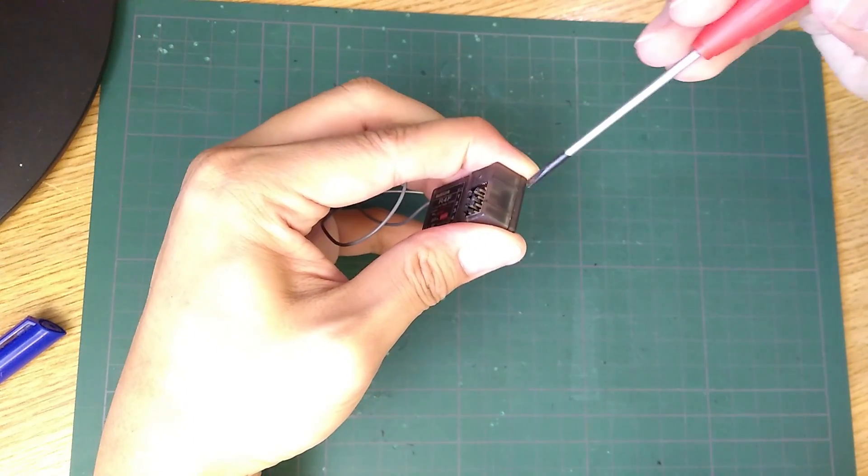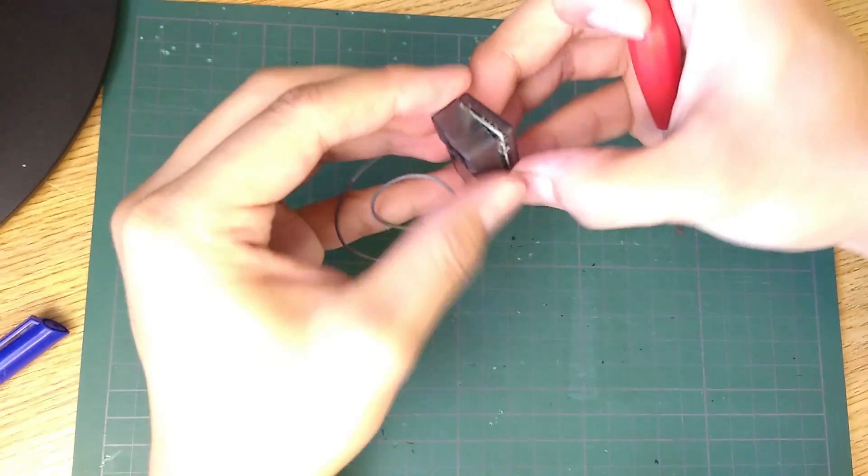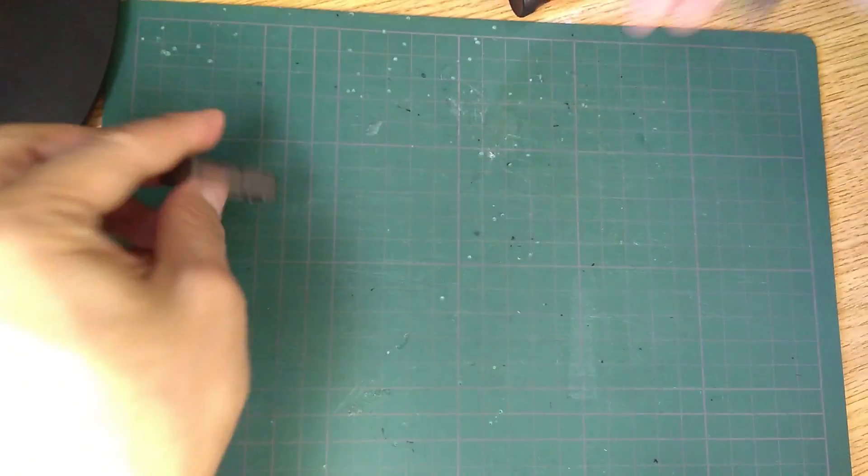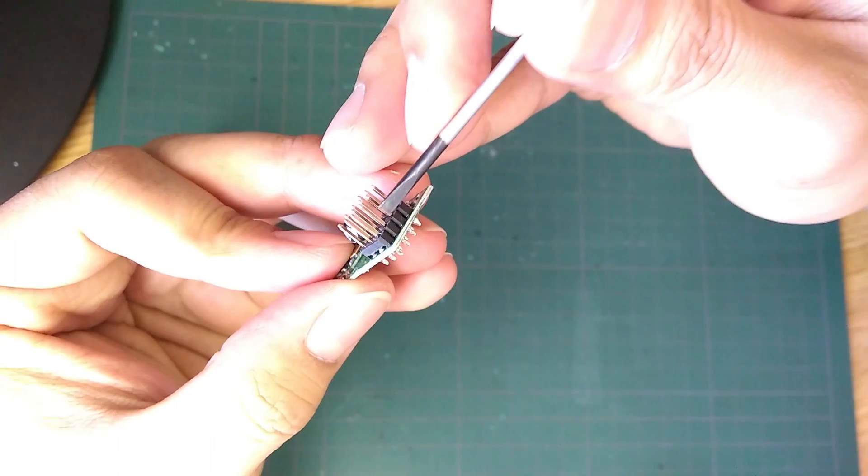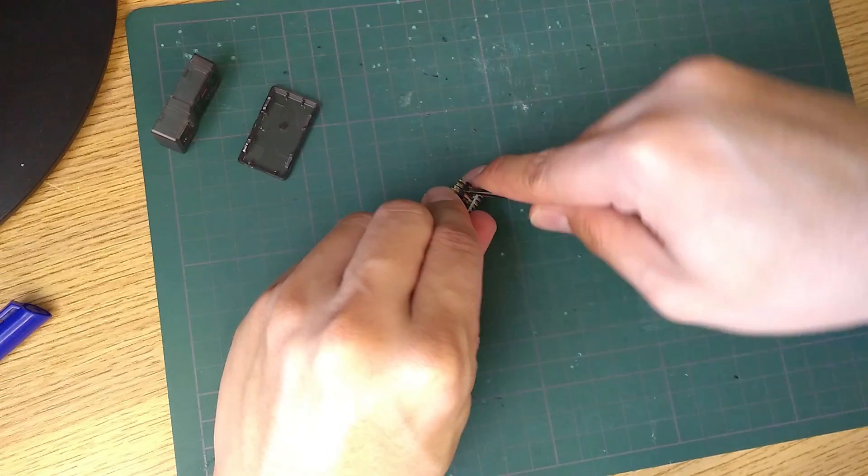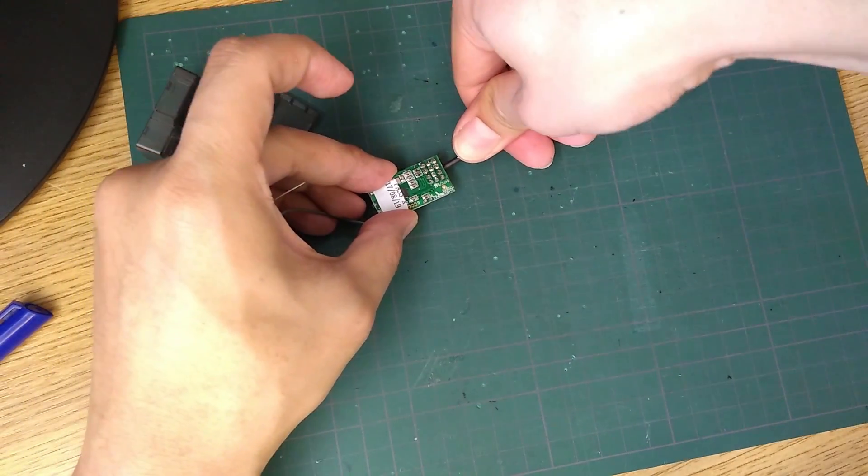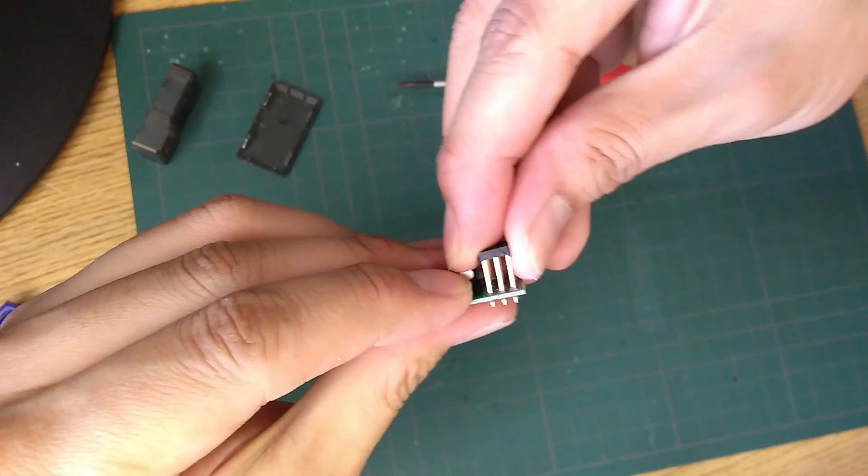I'll start preparing it by taking it out of the case and remove the black plastic part so the pins can come off easily. Use a small flat head screwdriver to slowly tease it out. Be careful not to damage any component on the board or break the receiver in half.